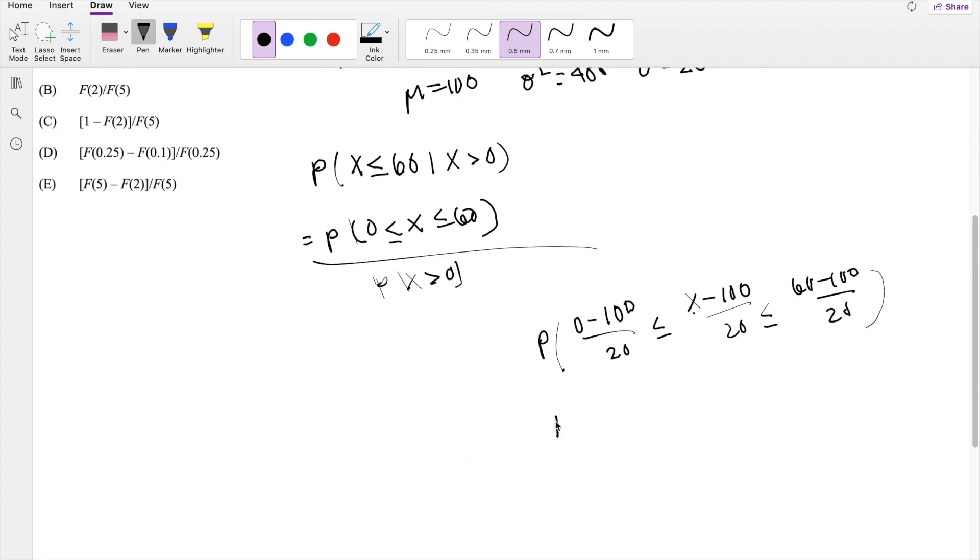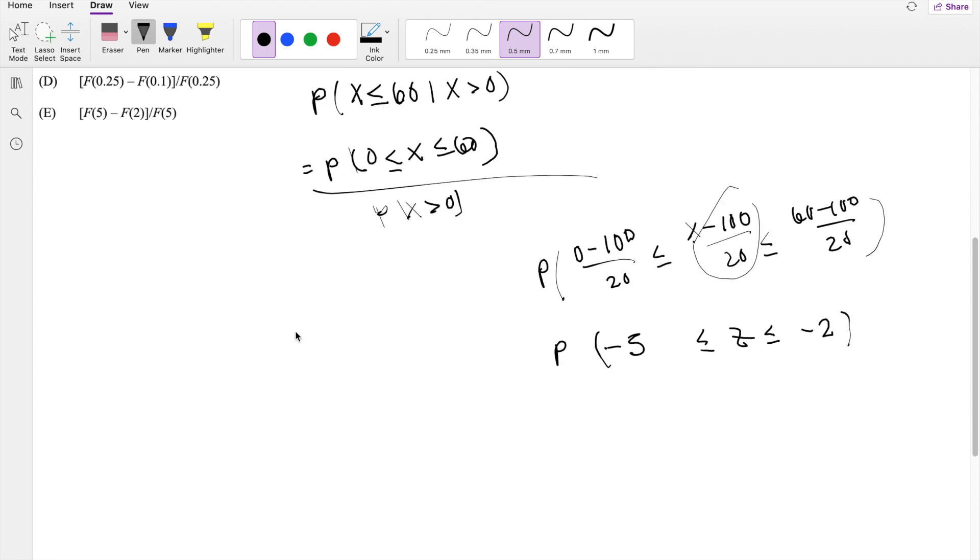So this is what you get. This right here is just the definition of Z. And negative 100 divided by 20, that's just probability of negative 5. And right here, 60 minus 100 is negative 40, divided by 20, that's negative 2. So basically, the numerator on a little Z table like this is between negative 5 and negative 2.